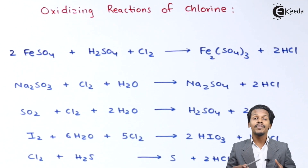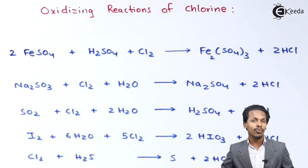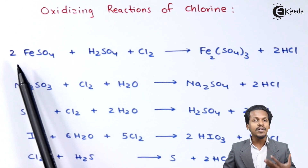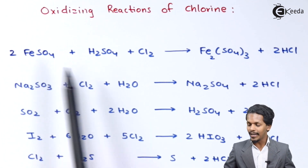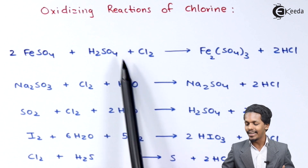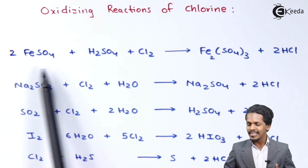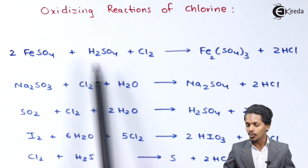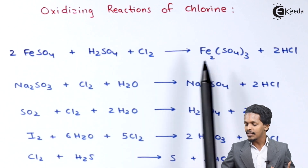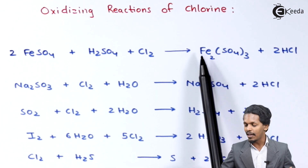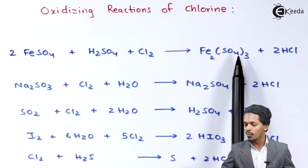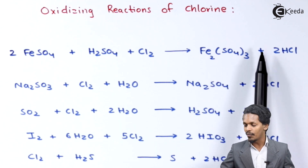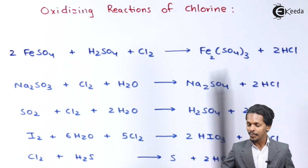So first we are going to talk about the oxidizing reactions of chlorine. Starting with the first one: whenever 2 moles of FeSO₄ is reacted with H₂SO₄ and Cl₂ — the H₂SO₄ provides acidic conditions — the product we get is Fe₂(SO₄)₃, known as ferric sulfate, along with 2 moles of HCl.